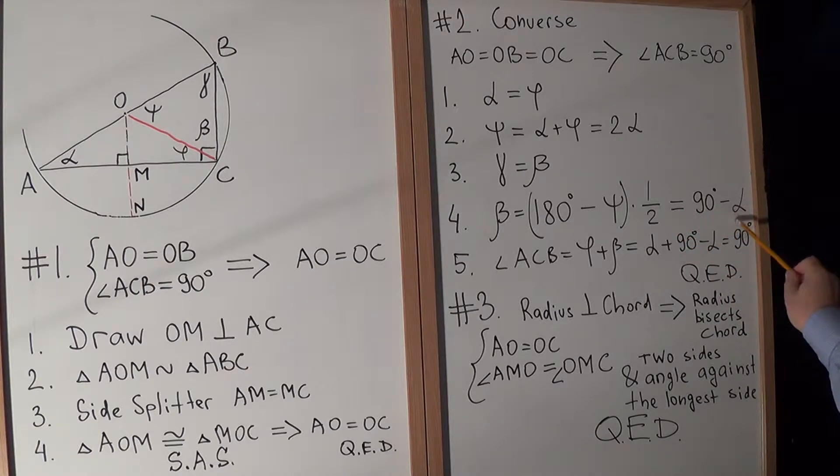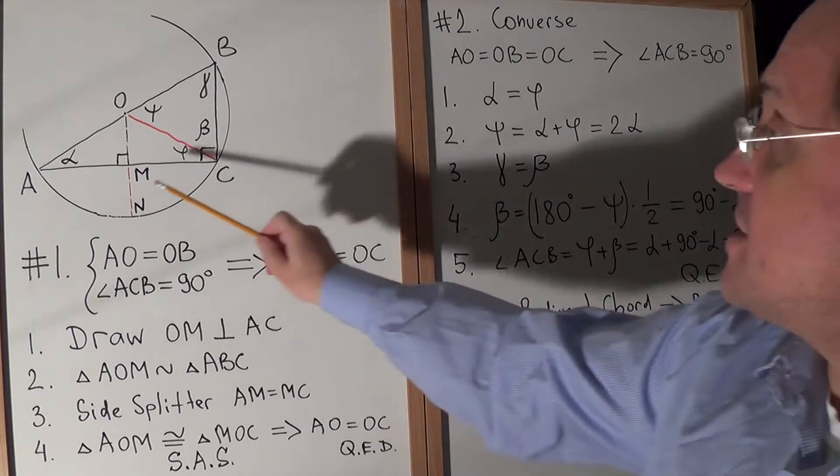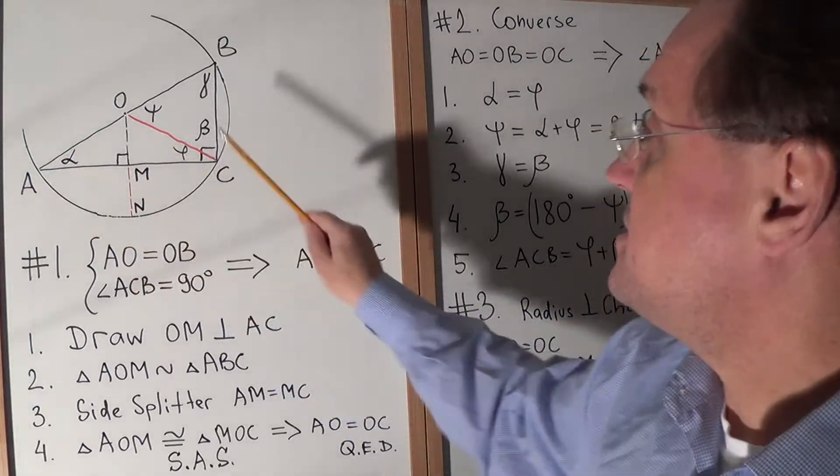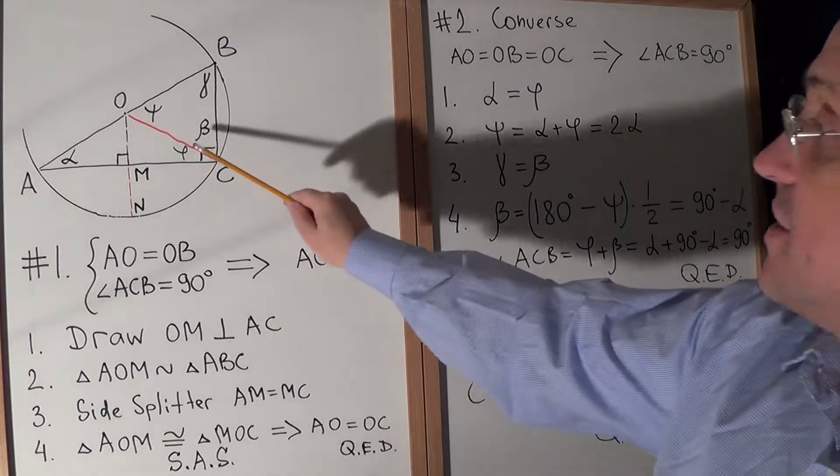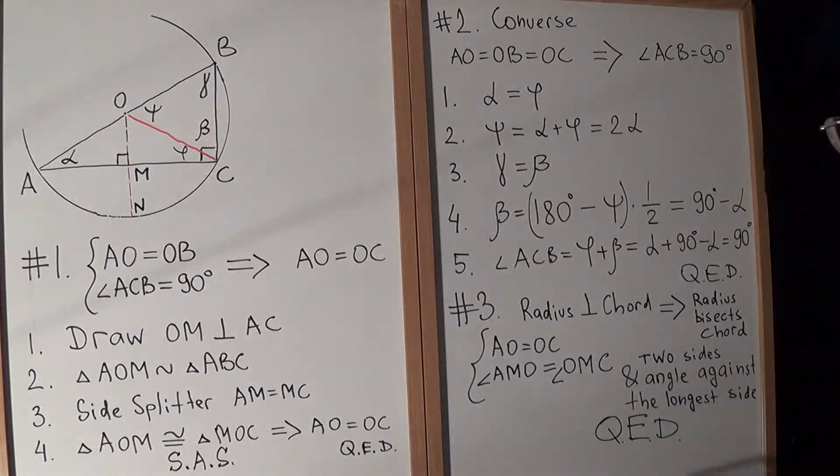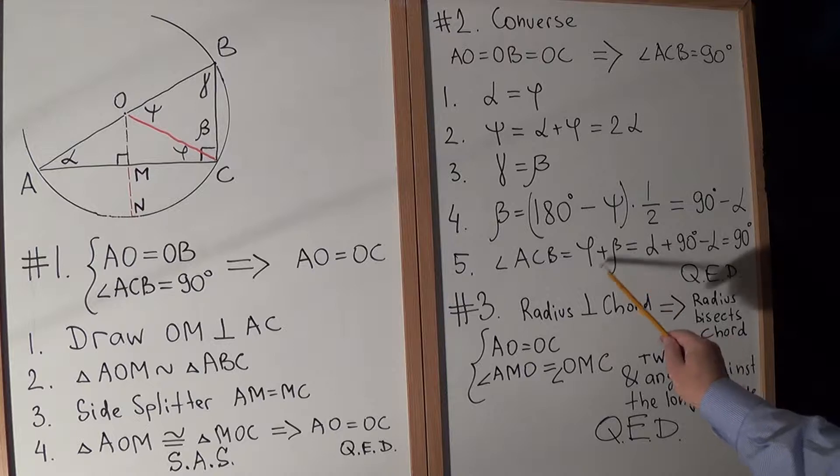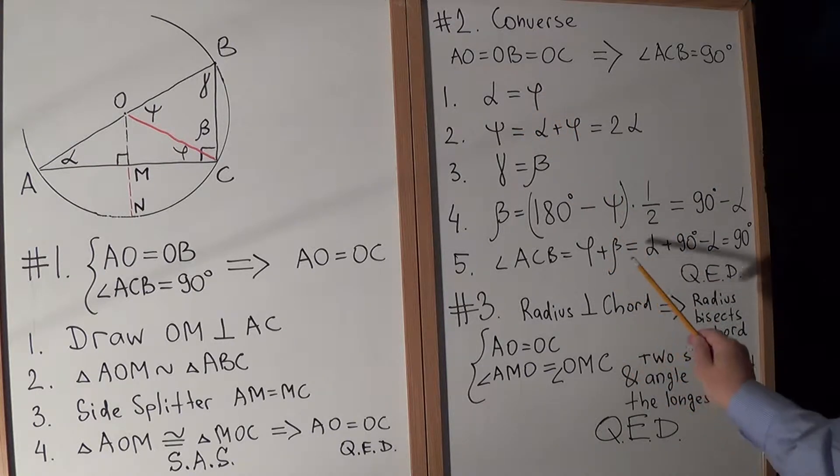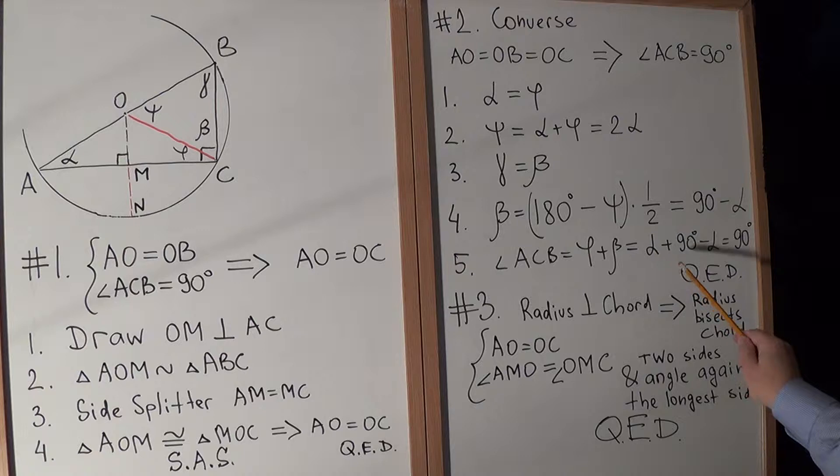In other words, it will be 90 minus alpha. Now let's consider angle ACB. It's phi plus beta. Phi equals alpha, beta equals 90 minus alpha, therefore in total it will be 90 degrees. We've proved the theorem.